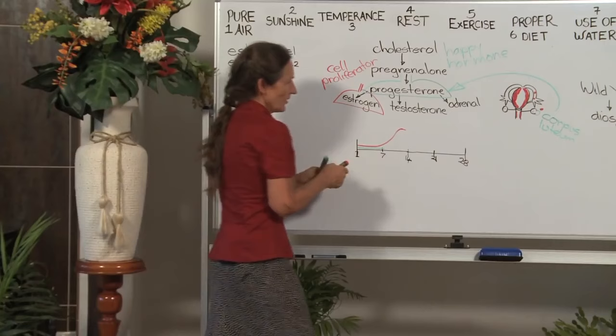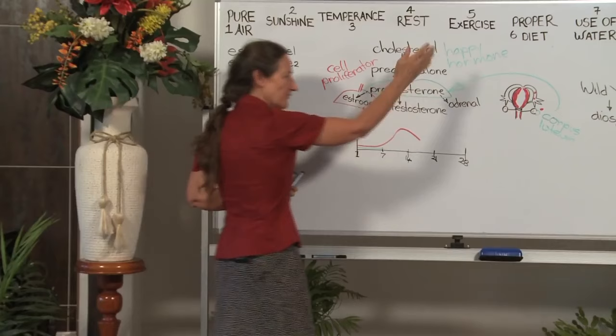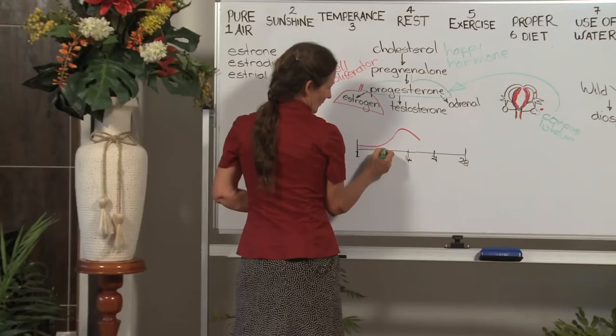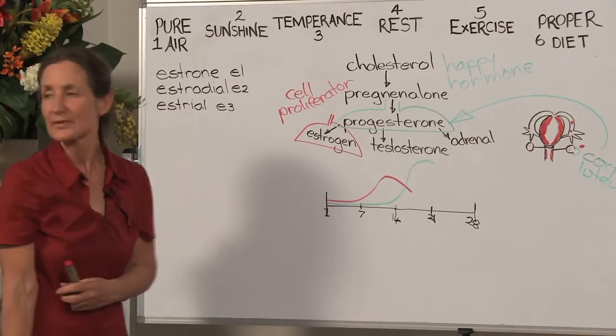So by day 14, 15, 16, estrogen is given the message it can go backstage now. No need for estrogen anymore. We have our blood nest, we have our egg, we have our lubricant. By day 14, with the development of corpus luteum, progesterone levels begin to rise.